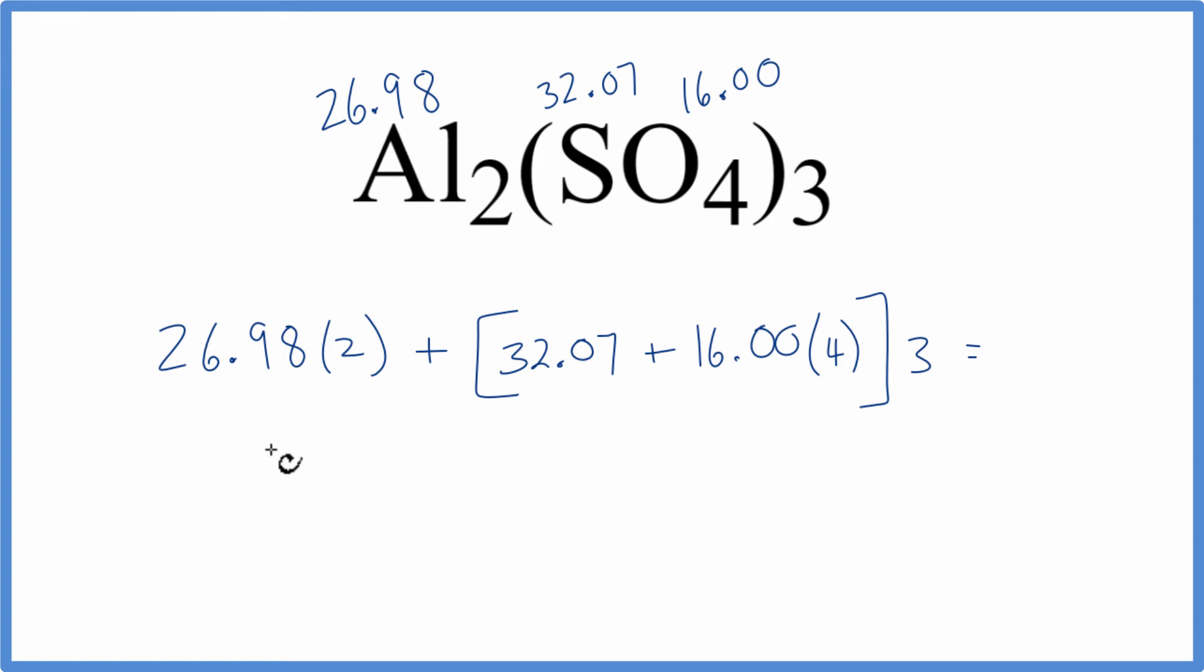So we have 53.96 grams per mole plus 96.07. We're going to multiply that by three. When we do that, we get 342.17 grams per mole as our molar mass or molecular weight for aluminum sulfate.